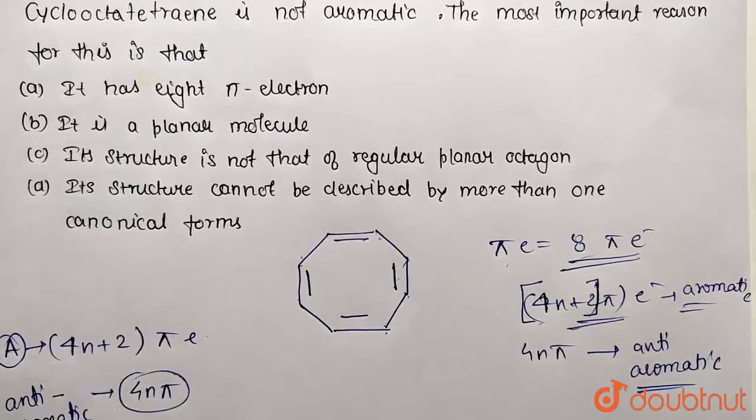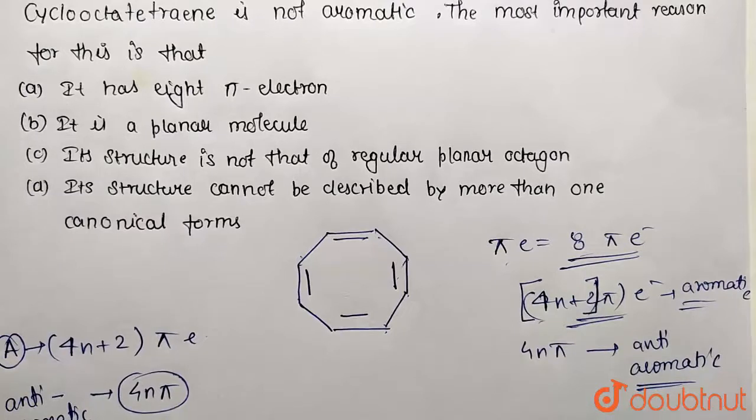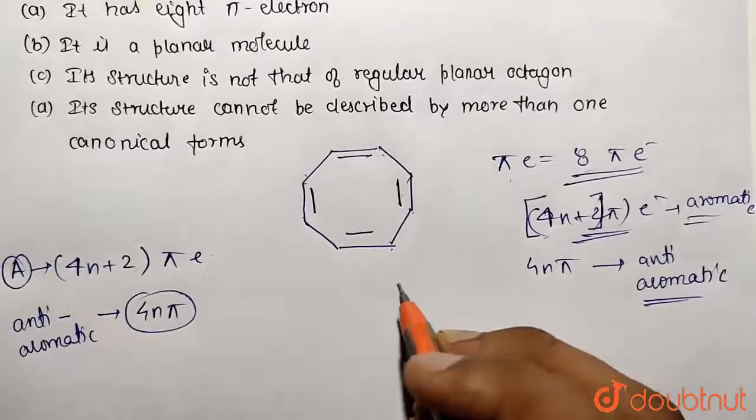Now if you find, this is going to be a multiple of 4n pi, so it is going to be anti-aromatic in nature. So this is anti-aromatic in nature.